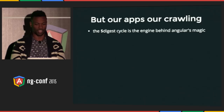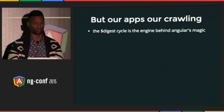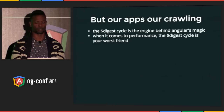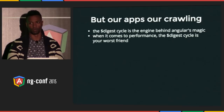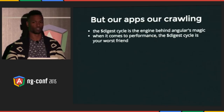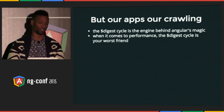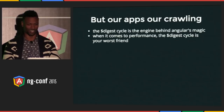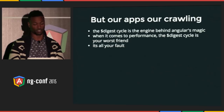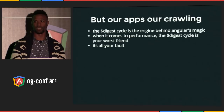What's happening is because of the thing we love so much — the digest cycle. I like to describe the digest cycle as the engine behind Angular's magic. But when it comes to performance it's your worst friend. Think of it like the friend you tell all your secrets to, who knows everything about you, but then goes behind your back and tells everybody those secrets. That's the digest cycle — and that enemy is performance. It's still our friend, but it's all your fault.